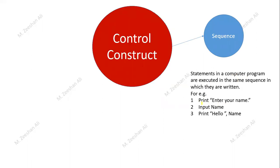For example, in this program: the first statement says 'print enter your name', the second says 'input name', and the third says 'hello name'. First the message appears on screen, then it takes input from the user, and when the person enters their name, the third message appears saying hello. These statements are executed in the same order as written. Sequence means the order of statements in which they are written and executed.